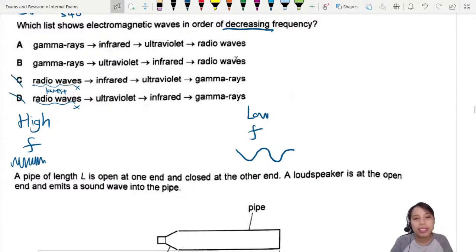We look at the low frequency and it has to be radio wave. So gamma ray is wrong already. C and D are confirmed out.